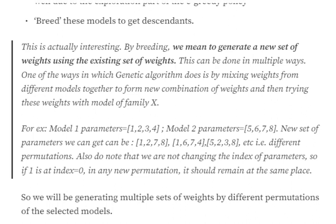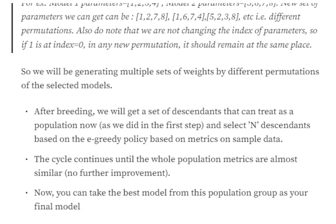This new set of descendants becomes a population. We recalculate metrics using these new weights, then choose the best N models following the epsilon-greedy policy. The cycle continues until the whole population's metrics are almost similar — meaning all descendants are giving nearly the same result, indicating we have reached a saturation point. We then take the best model from the final population group for deployment. We haven't trained anything — no gradient descent, no loss function. It's a permutation-combination problem of generating multiple samples and cross-matching the weights of those that perform well.